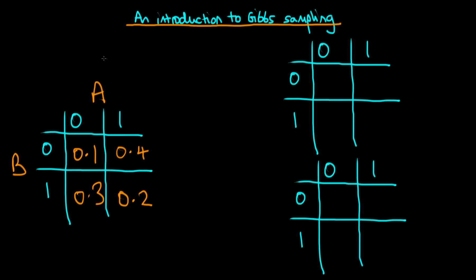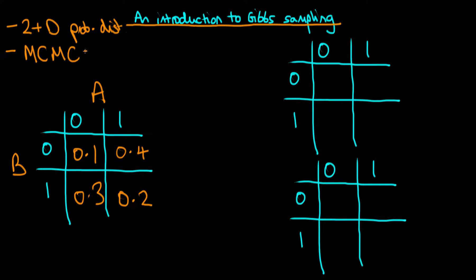In this video, I want to provide a short introduction to Gibbs sampling. What is Gibbs sampling? It's a way of sampling from probability distributions of 2 or more dimensions. And like the Metropolis algorithm, it is a method of Markov chain Monte Carlo, which means it's a type of dependent sampling algorithm.